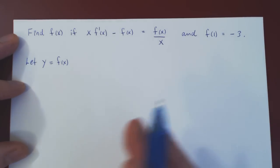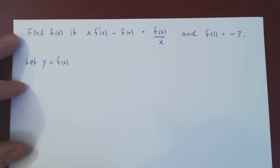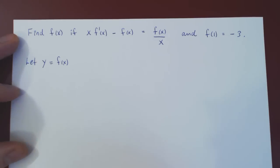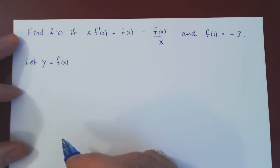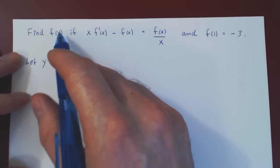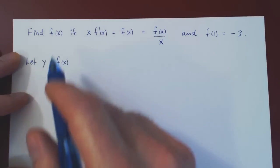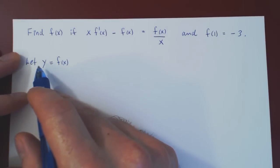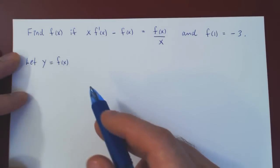If we separate all the x's together and all the y's together, we'll have an equality between two differentials — a differential in x and a differential in y. Then as we integrate both sides, we'll hopefully be able to recover y as an explicit function of x.